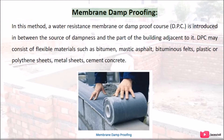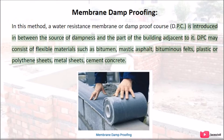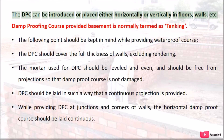Membrane damp proofing: in this method, a water resistant membrane or damp proof course (DPC) is introduced between the source of dampness and the part of the building adjacent to it. DPC may consist of flexible materials such as bitumen, mastic asphalt, bituminous felts, plastic or polythene sheets, metal sheets, or cement concrete. The DPC can be placed either horizontally or vertically in floors, walls, etc.